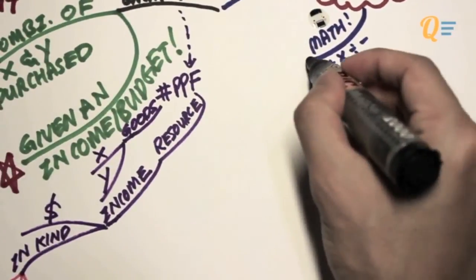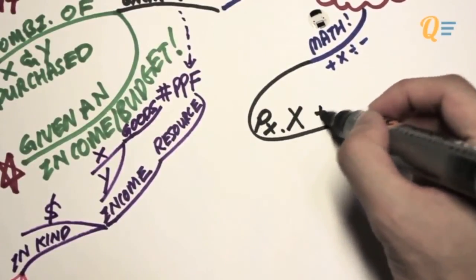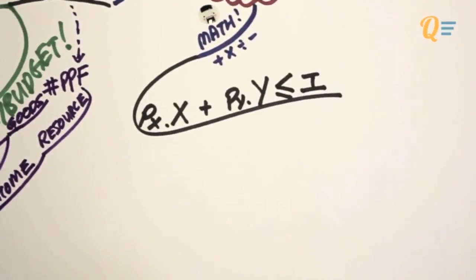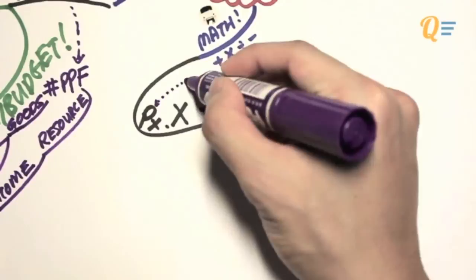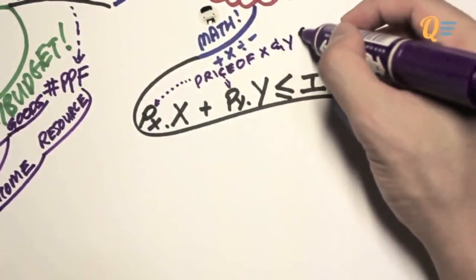To mathematically illustrate the budget constraint, we have an equation that looks like price of X multiplied by X plus price of Y multiplied by Y, which is less than or equal to income. So we know that PX and PY is simply the price of X and Y.